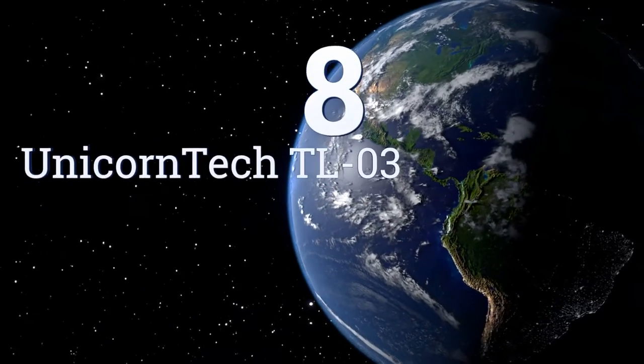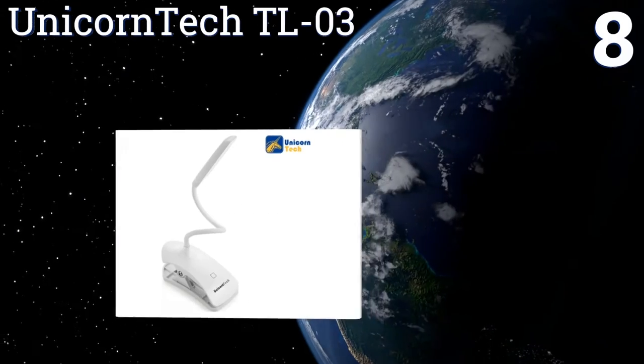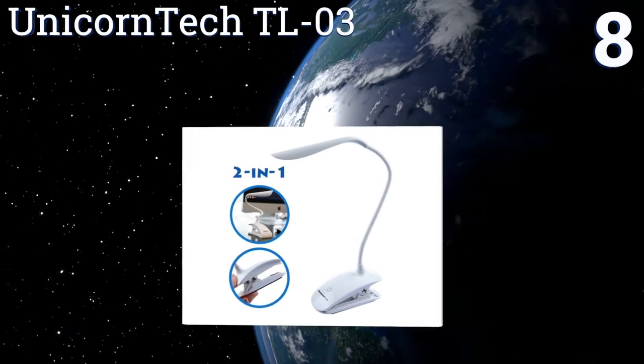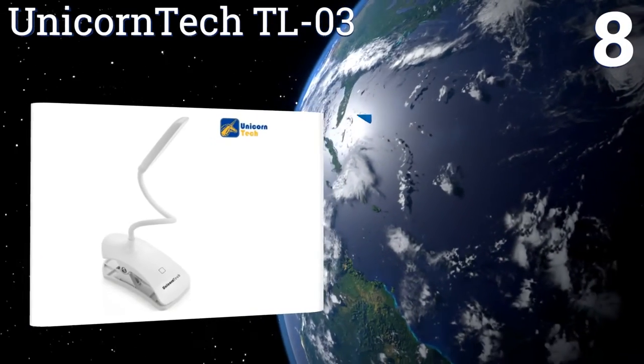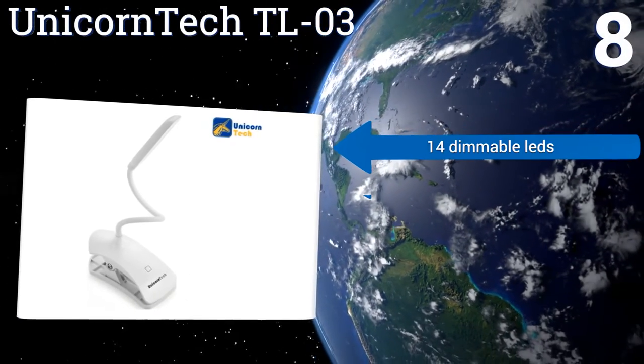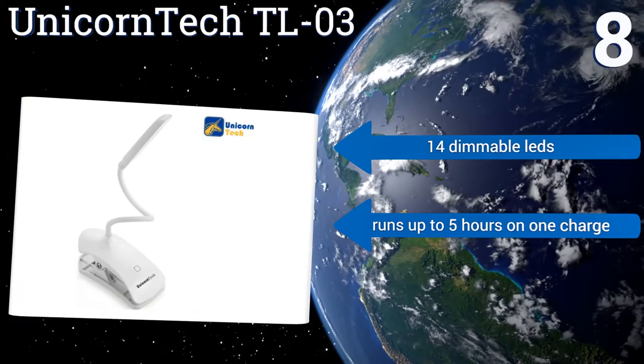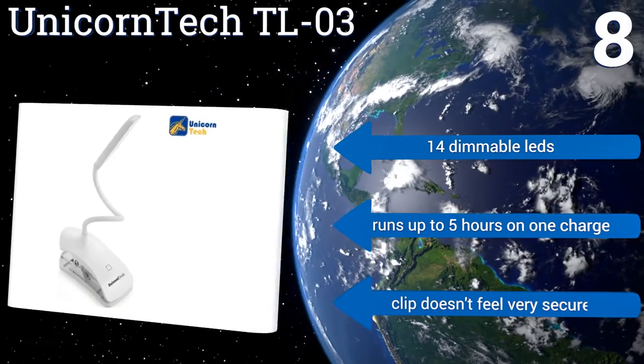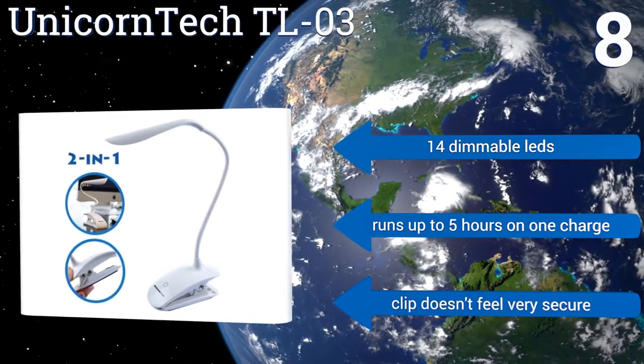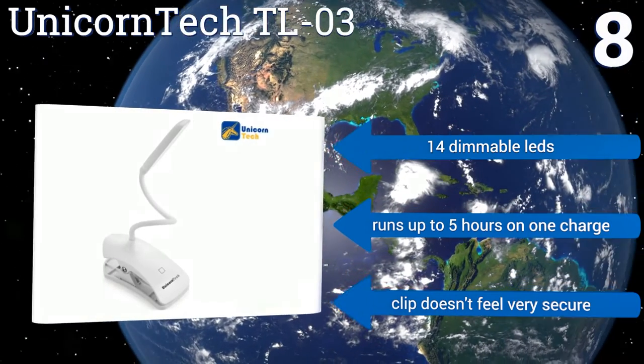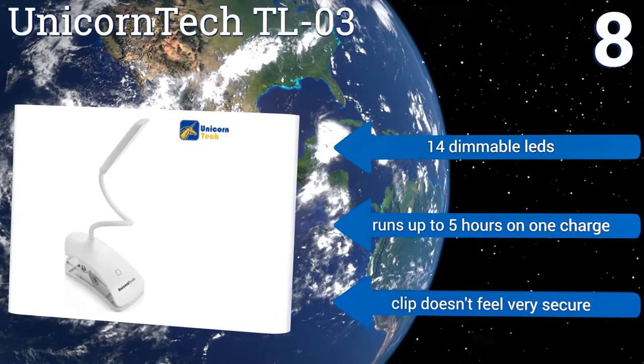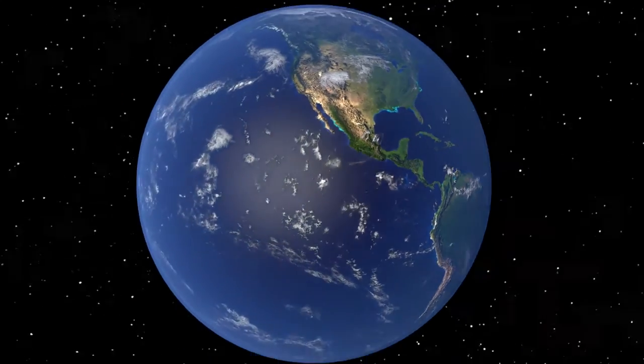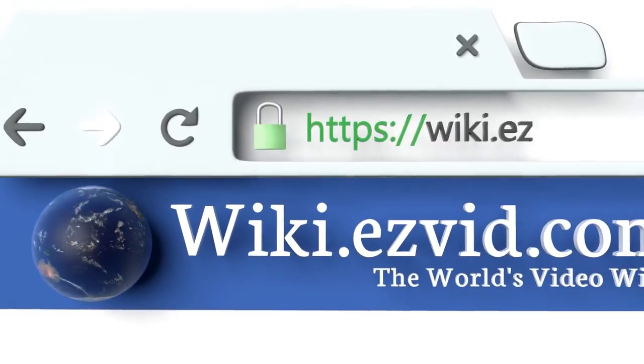Coming in at number 8 on our list, with a built-in battery, the Unicorn Tech TLO3 makes a great portable choice at an amazing price. It can stand on its base or be clipped to any surface, conveniently charges through its USB port, and has an indicator light that lets you know when it's fully charged. It features 14 dimmable LEDs and up to 5 hours of runtime on one charge. However, the clip doesn't feel very secure.